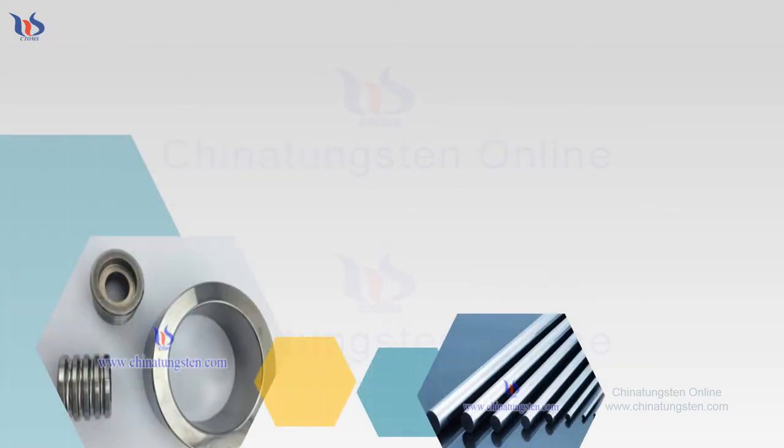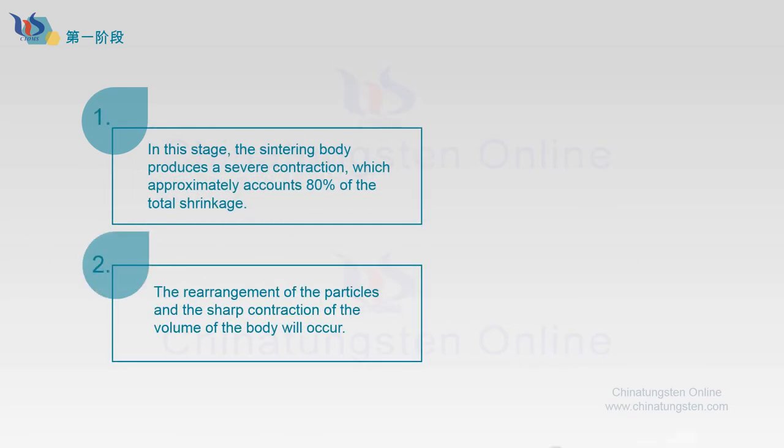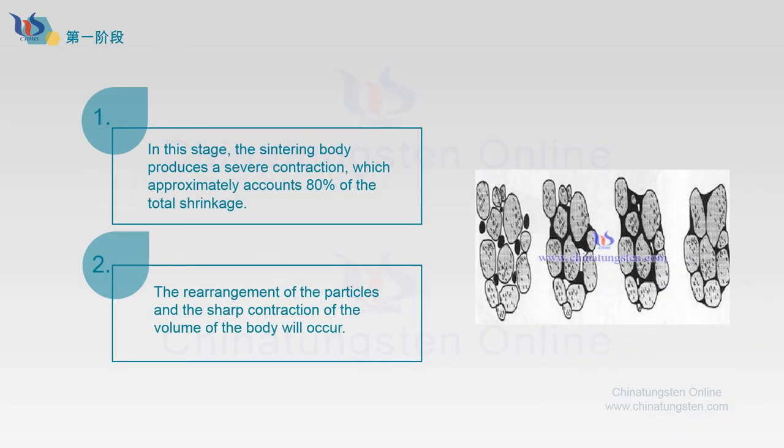At temperatures higher than 1150 degrees and before the appearance of liquid phase, in this stage, the sintering body produces a severe contraction, which accounts for 80% of the total shrinkage. Because the sintering temperature is close to the eutectic temperature, plastic flow will occur in bonded metal. The rearrangement of the particles and the sharp contraction of the volume of the body will occur.